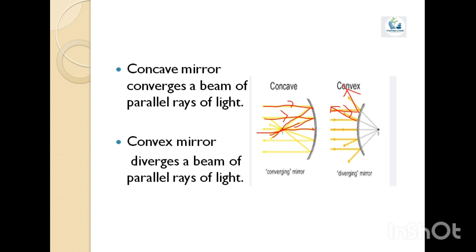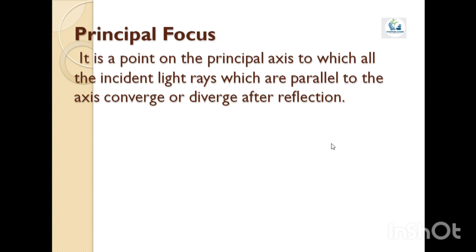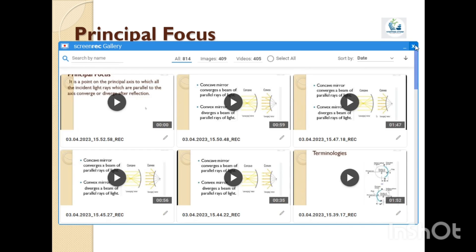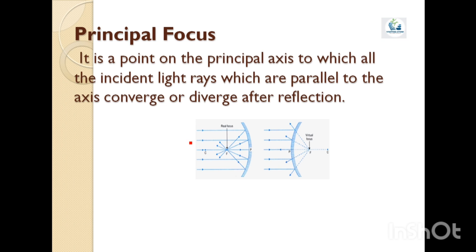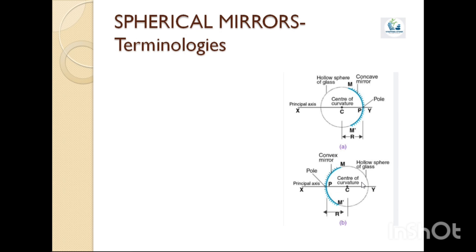Next is the principal focus — it is a point on the principal axis to which all the incident light rays parallel to the axis converge or diverge after reflection. In the case of a concave mirror, the reflected rays meet at a point; this is the principal focus. In the case of a convex mirror, the incident parallel rays diverge after reflection, but if we produce all the reflected rays backward they appear to meet at a point F — this is your virtual focus in the case of a convex mirror.